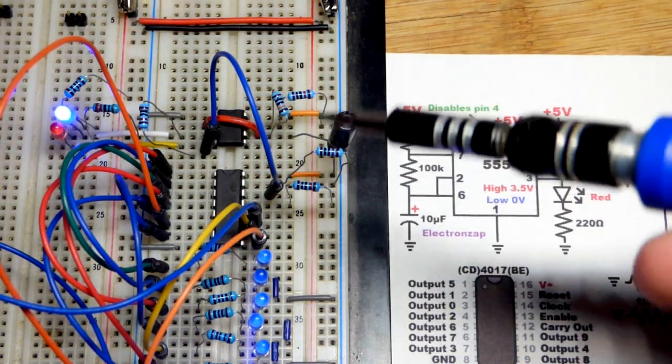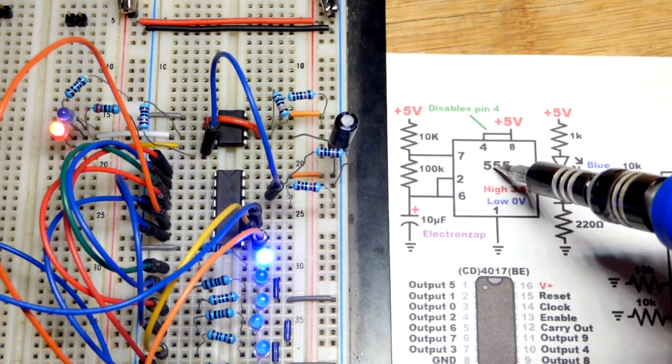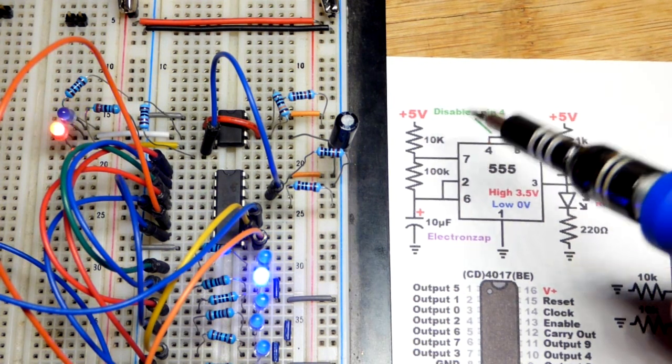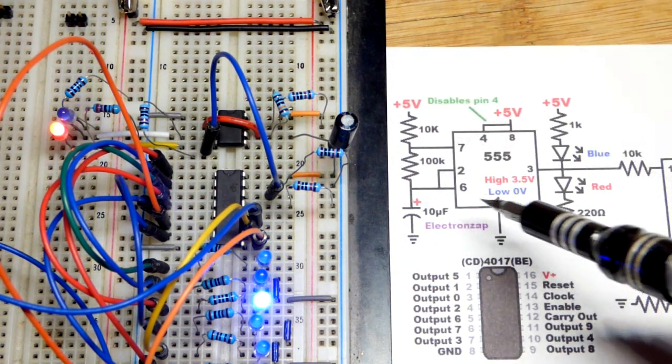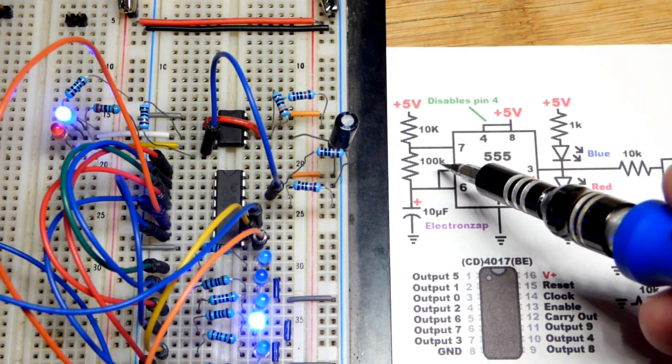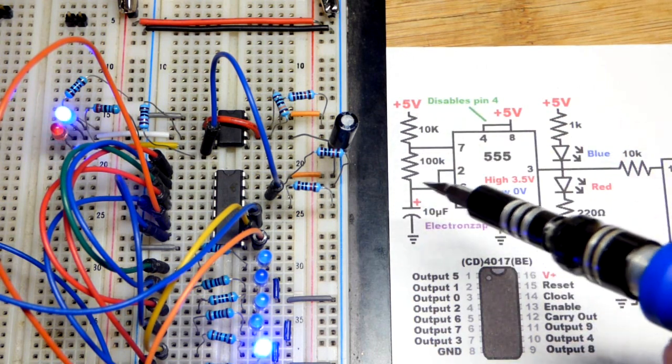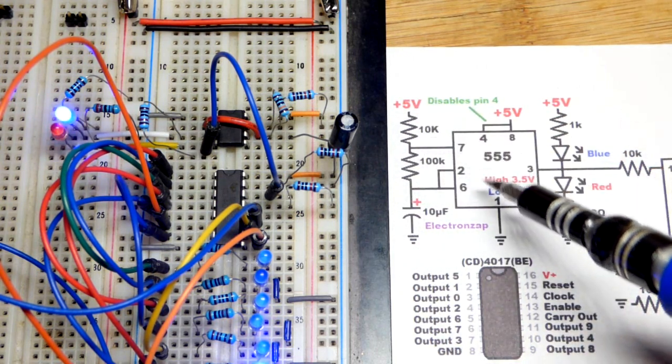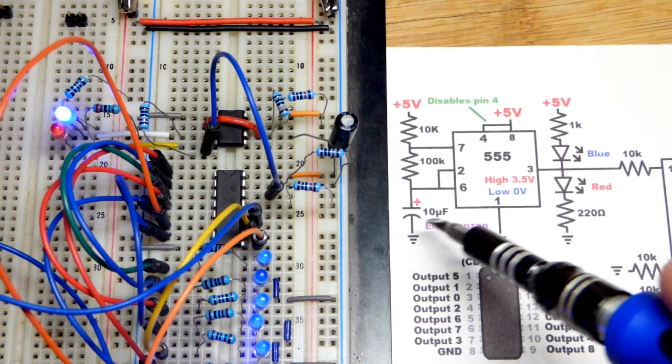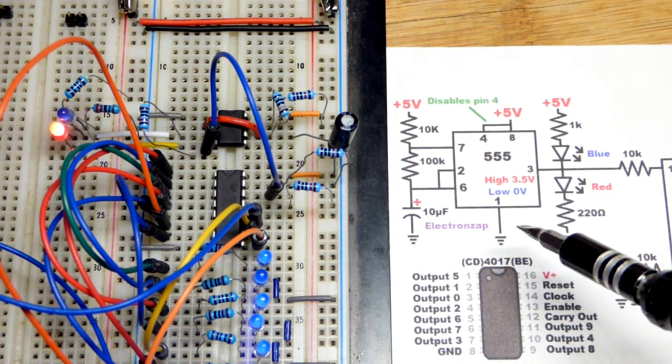So I know we got wires all over the place, but we got the 555 timer right there, NE555. It's wired in astable mode. So it's mostly this 100,000 ohm resistor, a little bit with the 10,000 ohm resistor, setting the output timing high and low right there, 10 microfarad capacitor.